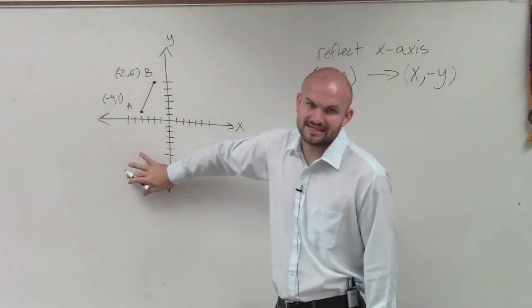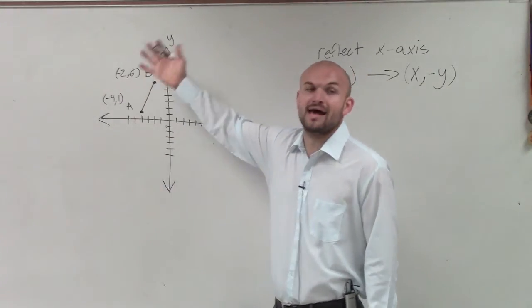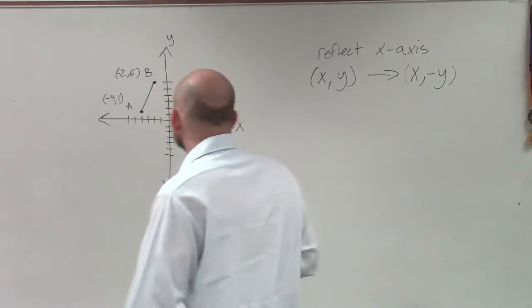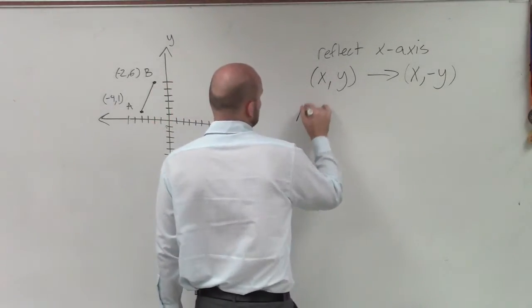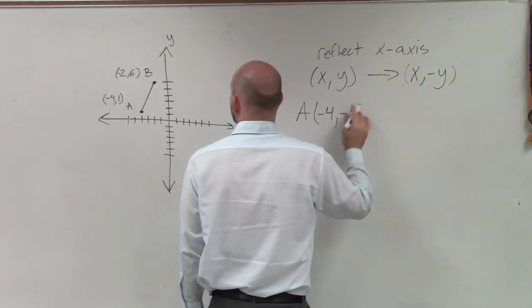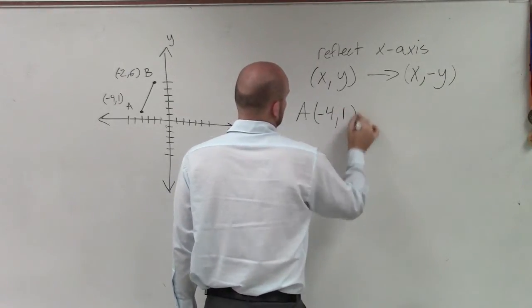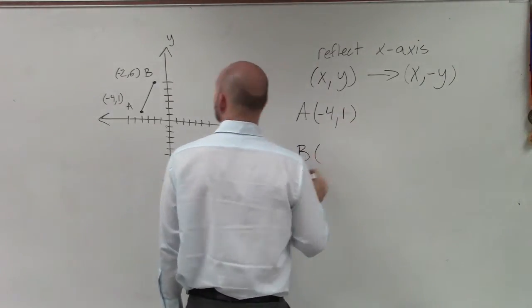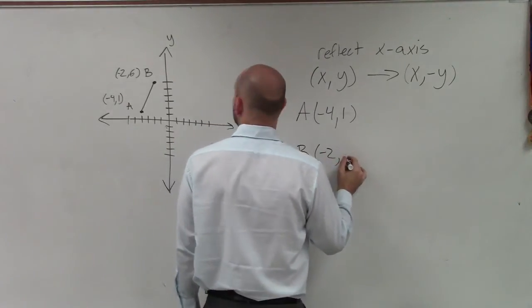Same thing. If I had something negative and I reflected over the y-axis, it's now going to be positive. So what I'm going to do is let's write out our points. So my point A is negative 4 comma 1. And my point B is negative 2 comma 6.